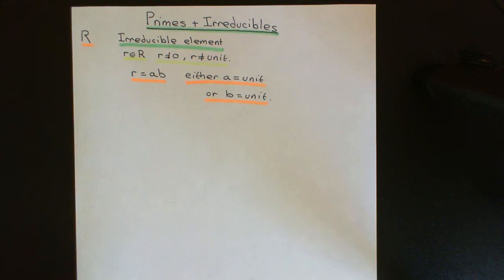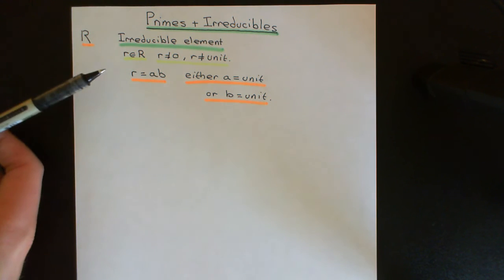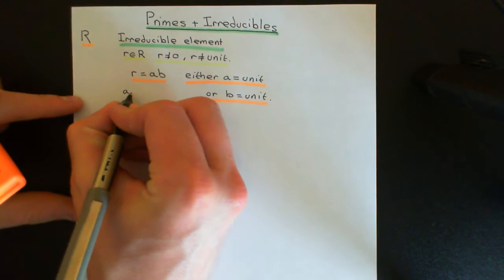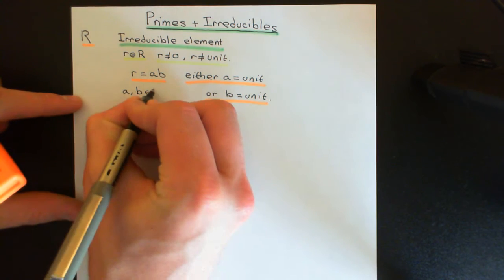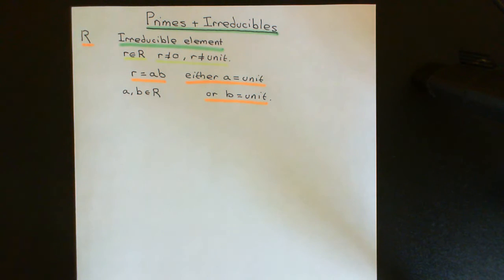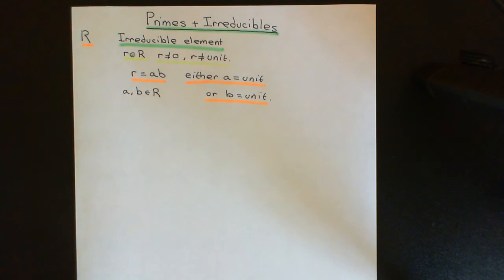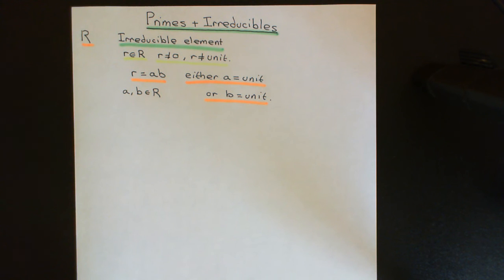Elements which do not meet this definition — where it is possible to find a product of two elements a and b, both non-units in the ring R, which multiply together to give r — those elements are called reducible elements. They are not irreducible.